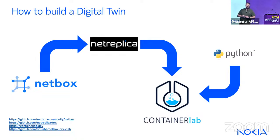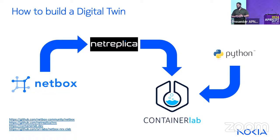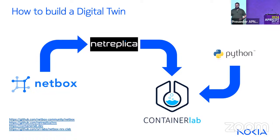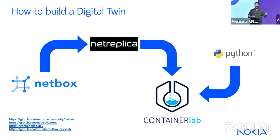The toolchain starts with NetBox — an open-source source-of-truth application to document devices, racks, links, and IP addresses. Net-replica (NRX) is another open-source tool that queries NetBox and generates a topology file. That topology file feeds into ContainerLab, and with a Python configuration management script, builds a one-to-one replica of the documented network.